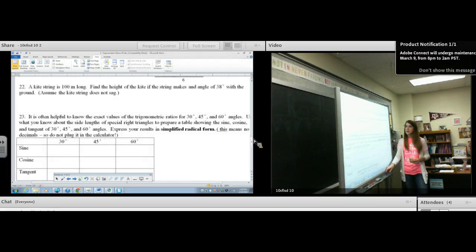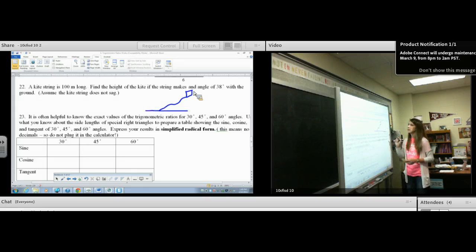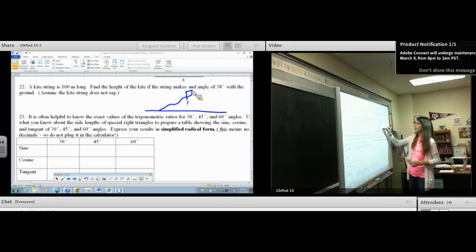A kite string is 100 meters long. Let's draw a kite. There's a kite. There's a string. There's the ground. Find the height of the kite. Huh, that rhymes. Height, kite. Find the height of the kite if the string makes an angle of 38 degrees with the ground.